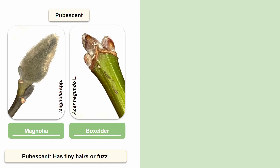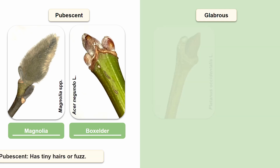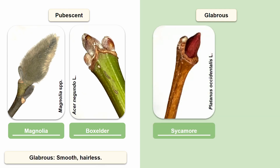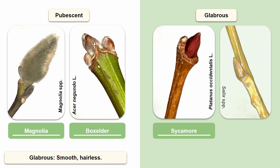Another term that is useful to know is glabrous. Glabrous means that an apical bud is smooth and has no hair or fuzz present. An example of glabrous would be the apical bud of a sycamore twig. There are no hairs present on this twig, and a glabrous bud can also be waxy, as seen in the picture of the lateral bud on this willow twig.